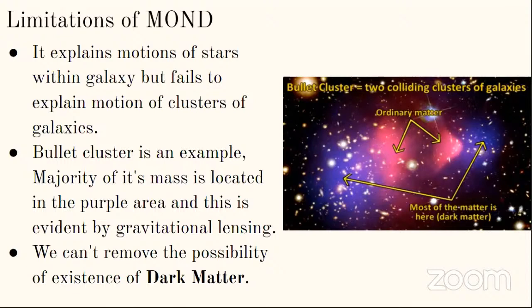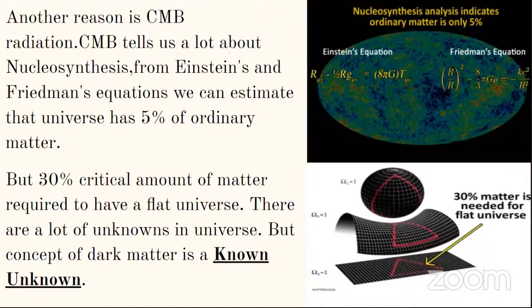MOND explains the motions of stars within galaxies, but fails to explain the motions of galaxy clusters — for example the bullet cluster, where gravitational lensing shows most mass located in the purple region, making it difficult to completely remove the possibility of dark matter. Another limitation involves the CMB: from Einstein's and Friedmann's equations we can estimate the universe has about 5% ordinary matter, but a flat universe requires 30% critical matter. These unknowns remain a significant challenge — the nature of dark matter remains unknown.